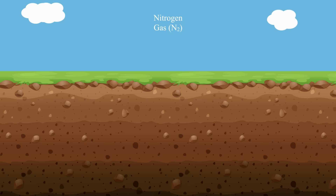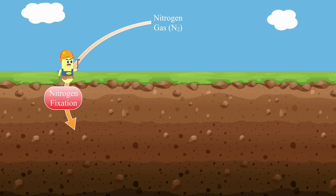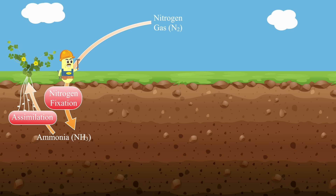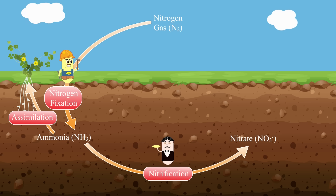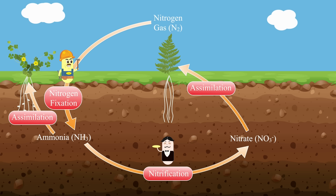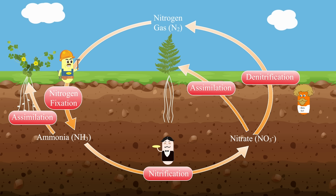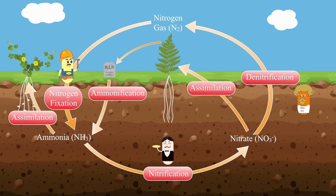Let's do a quick review. First, nitrogen fixation fixes nitrogen gas to make ammonia. This ammonia can be assimilated into plants, or go through nitrification to make nitrates. Nitrates can also be assimilated by plants, or undergo denitrification and be converted back into nitrogen gas. Also, nitrogen moves through food webs and is transferred whenever one organism eats another. When these organisms die, they get decomposed and their nitrogen becomes ammonia again via ammonification. And there you have it, the nitrogen cycle.